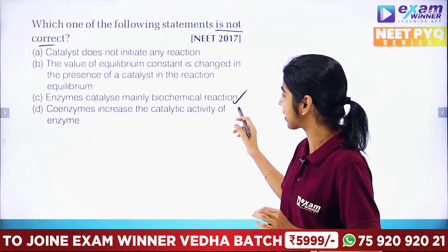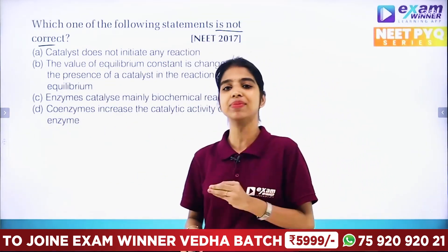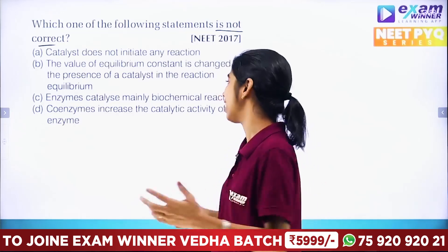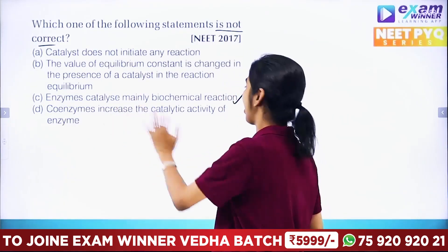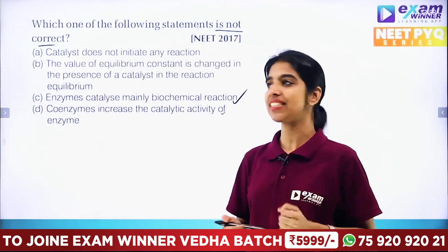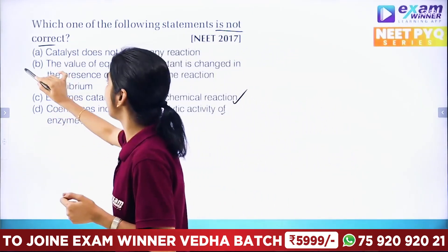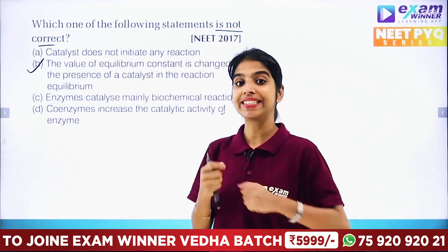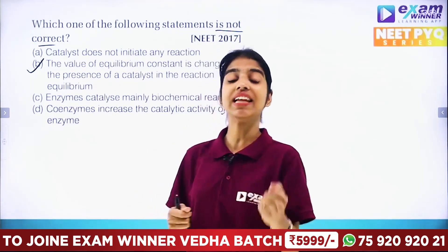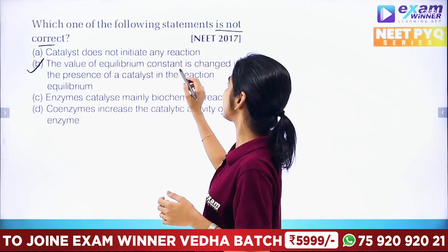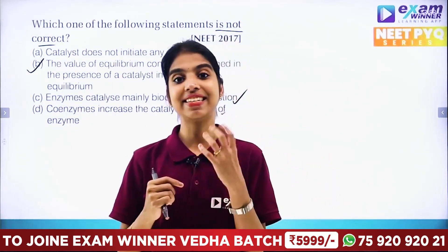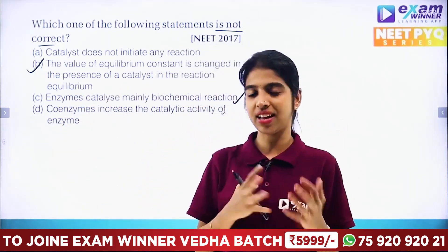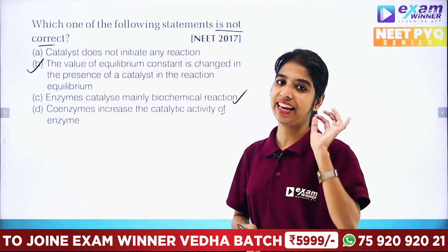Co-enzymes increase the catalytic activity of enzymes. Option B is the answer. Catalyst does not have any reactions to this reaction. A catalyst will increase the rate of reaction. If you don't change the equilibrium constant value, it will increase the rate of the forward reaction. Option B is incorrect.